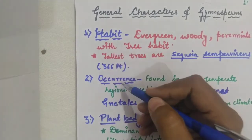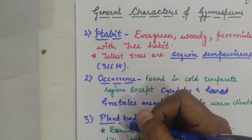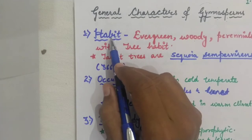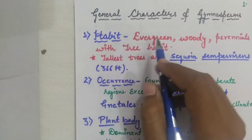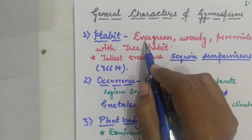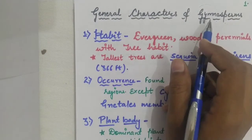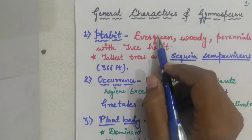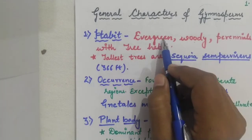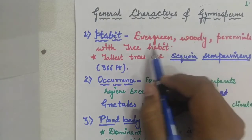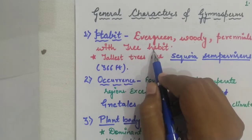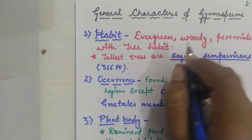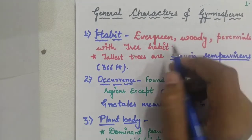In habit, the plants have a perennial habit. These are evergreen and woody with a tree habit, which means herbs and shrubs are absent.